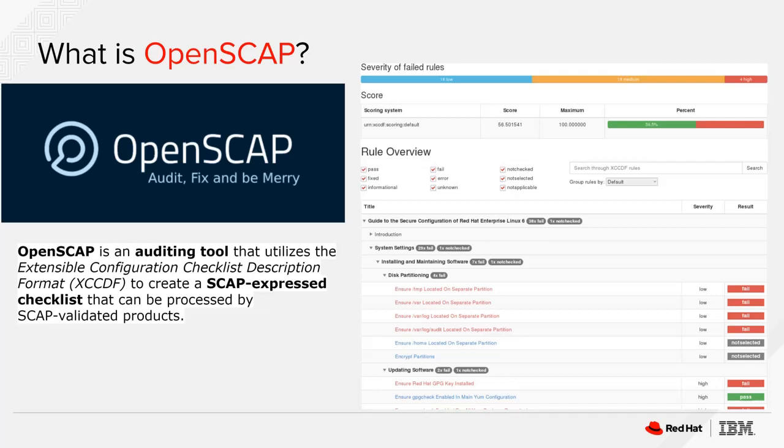Now that we know what SCAP is, what exactly is OpenSCAP? Well, back when SCAP was being defined, the engineers at Red Hat began meeting with NIST. Their goal was to create an open source project that took the standards defined by SCAP and provide a way to automatically apply those standards to any Linux operating system. It was in this interaction between the U.S. government and Red Hat that spawned the OpenSCAP initiative. In short, OpenSCAP is simply an auditing tool that utilizes the Security Content Automation Protocol to create an SCAP expressed checklist that can be processed by an SCAP validated product.